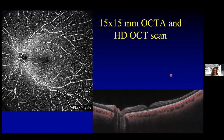All of the OCT-A machines have different protocols for imaging, and there's a huge variety of protocols available. This has become one of my more recent favorite protocols for diabetic patients. This is a 15 by 15 millimeter OCT-A scan on the left, and on the right is a high-definition structural OCT, and I find this gives me a lot of information quickly about my diabetic patients.